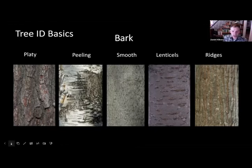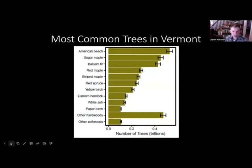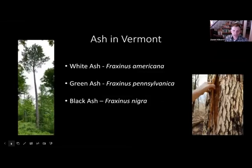Someone wants to know what the 10 or so most common trees in Vermont are. This figure is from the U.S. Forest Service 2017 publication, Forests of Vermont, showing the numbers of individual trees. Leading the way: American beech, followed by sugar maple, balsam fir, red maple, striped maple, red spruce, yellow birch, hemlock, white ash, and taking up the rear, paper birch. We'll focus on many of these today and get into our top 10.